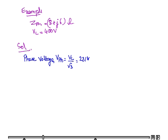First we will find the phase voltage. VPH is VL upon root 3. In this question, VL is 400, so putting the value, we get 231 volts.